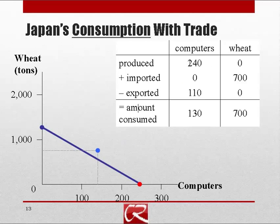Japan produces 240 computers, exports 110 to the U.S., and is able to consume 130. It produced no wheat but imported 700 from the U.S., so it can consume 700 wheat. Plotting that point — 130 computers and 700 wheat — shows it's beyond Japan's initial PPF. Japan is able to consume a combination of the two goods it couldn't otherwise attain.